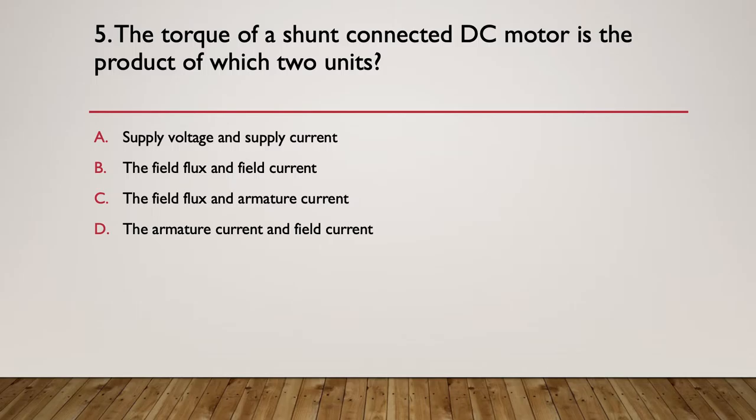Question six: The torque of a shunt connected DC motor is the product of which two units? A, supply voltage and supply current; B, the field flux and the field current; C, the field flux and armature current; and D, the armature current and the field current. So which ones of those two units do we multiply together to give us the torque? That's what product means. Here's the hint: draw the diagram with the interplay of the fields.